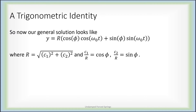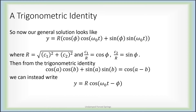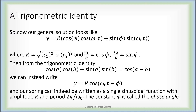Replacing c1 with R cos theta and c2 with R sine theta, we can apply the cosine difference formula: cos a cos b plus sine a sine b equals cosine of a minus b. That's exactly what we have, so we can write the general solution as R times the cosine of omega naught t minus phi. From this form we can very quickly determine the amplitude is R, the period is 2π over omega naught, and phi represents a phase shift.